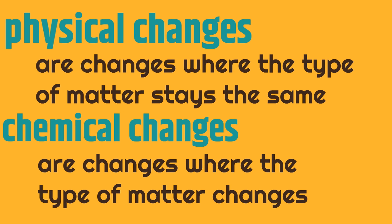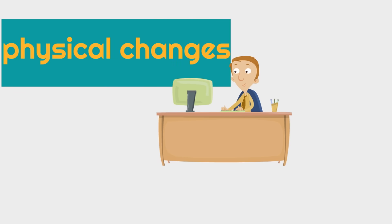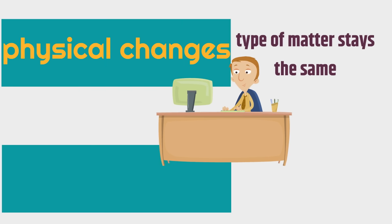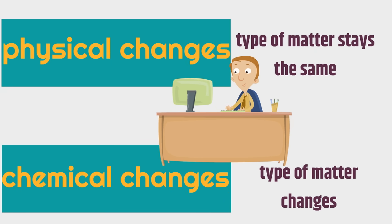The type of matter changes with a chemical change. With a physical change, the type of matter stays the same — even though it changes, the type of matter stays the same. So with physical changes, the type of matter stays the same, but with chemical changes, the type of matter changes.